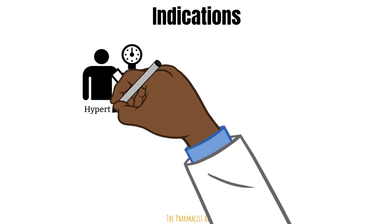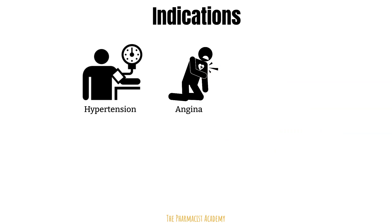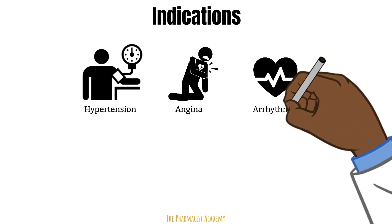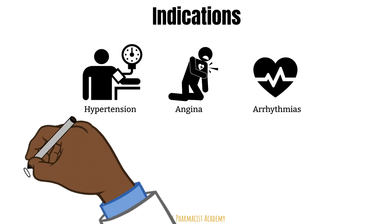The most common indications are hypertension, due to peripheral vasodilation — so the dihydropyridines are the go-to in this case. Angina, because the non-dihydropyridines can reduce oxygen demand on the heart and ease chest pain. And in arrhythmias where rate control is the goal, the non-dihydropyridines can reduce the heart rate. They are categorized as class 4 antiarrhythmic drugs.